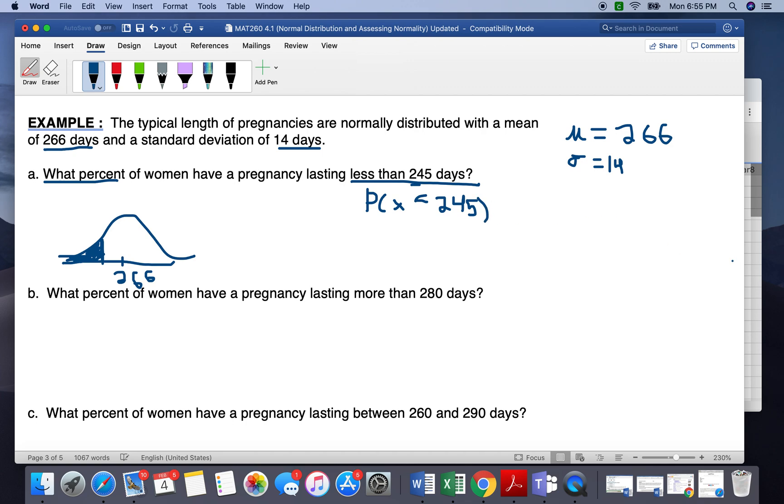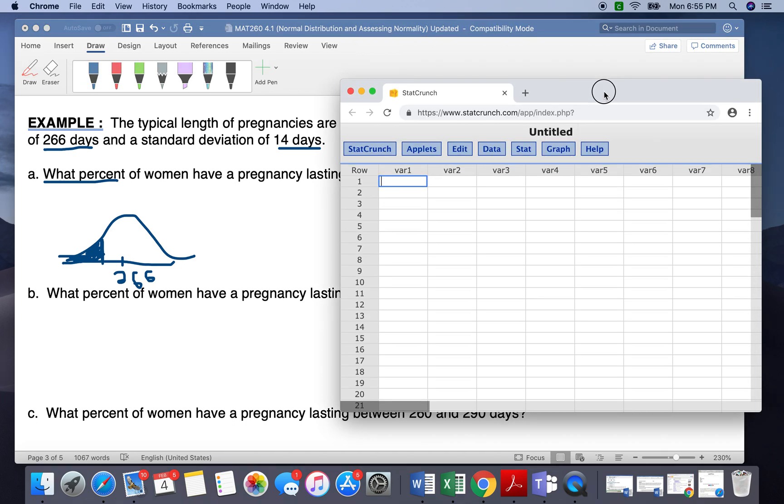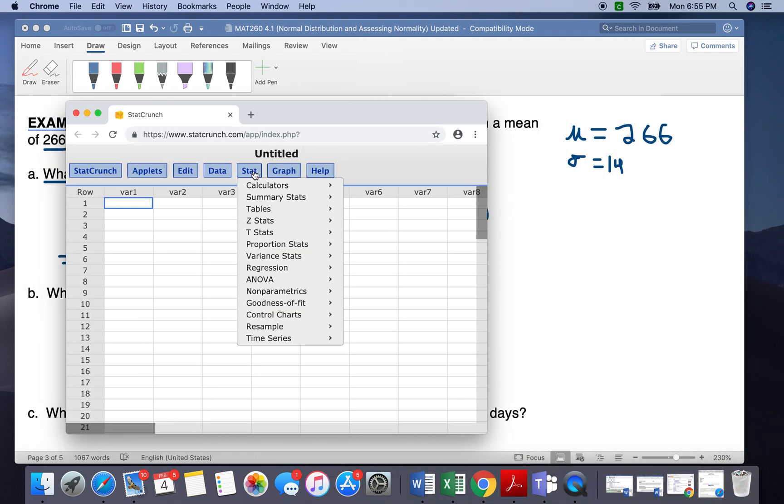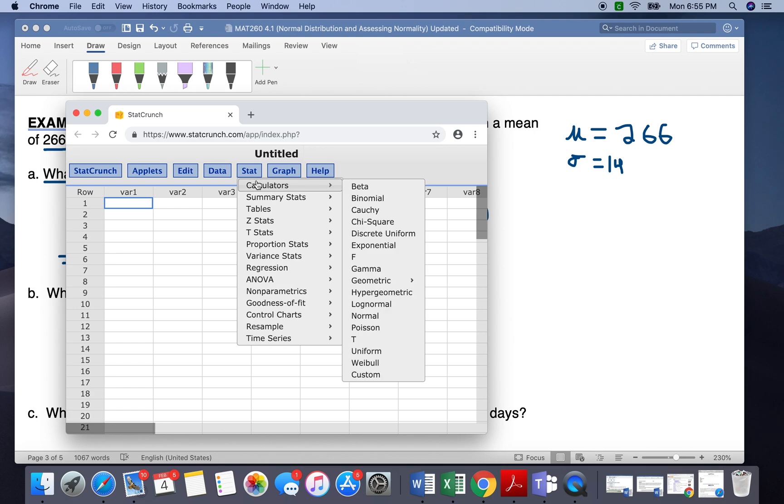So we can go into StatCrunch, which I have over here, and we want to put in all of this information. So to do that, you first want to go to Stat, Calculators, and then normal.